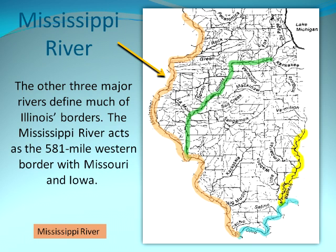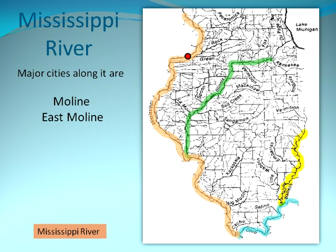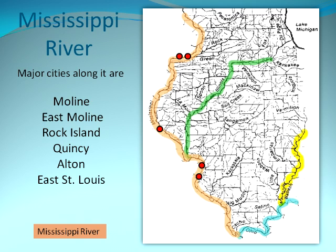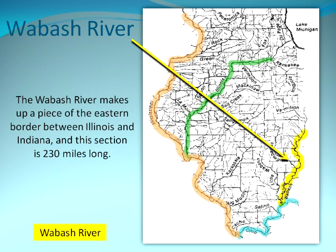The other three major rivers define much of Illinois' borders. The Mississippi River acts as a 581-mile western border with Missouri and Iowa. Major cities along it are Moline, East Moline, Rock Island, Quincy, Alton, East St. Louis, and Cahokia. The Wabash River makes up a piece of the eastern border between Illinois and Indiana, and this section is 230 miles long.